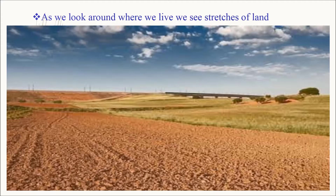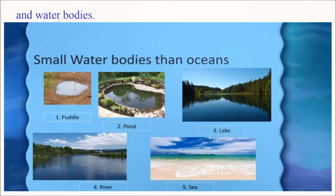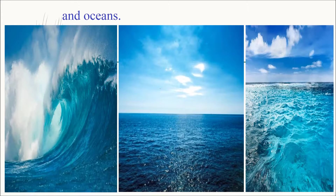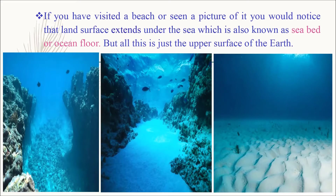As we look around where we live we see stretches of land and water bodies — small water bodies like puddles, ponds, lakes, rivers and seas. If we travel further we see huge seas and oceans. If you have visited a beach or seen a picture of it, you would notice that the land surface extends under the sea, which is also known as sea bed or ocean floor. But all this is just the upper surface of the earth.